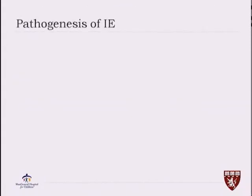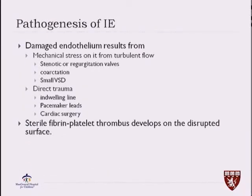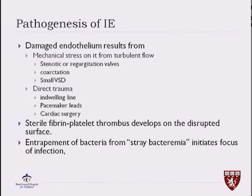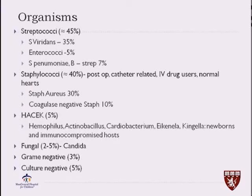The pathogenesis of infective endocarditis is interesting. There is damage of the endothelium resulting from turbulent flow — the jet damages the endothelium, causing endothelial dysfunction that attracts fibrin and platelets to form a thrombus. The thrombus entraps bacteria from stray bacteremia. We all have bacteremia in our body on a daily basis, so this stray bacteria initiates a focus of infection. Platelets and fibrin are deposited, forming vegetation. The most common organisms are streptococci, then staph, then HACEK organisms like Haemophilus, Actinobacillus, Eikenella, Kingella. It can be fungal, gram-negative, or culture-negative.